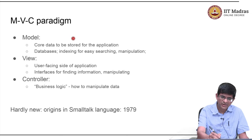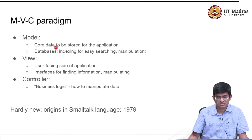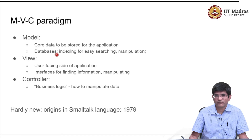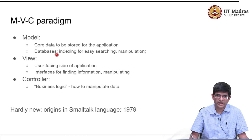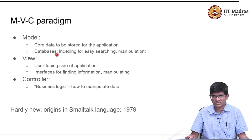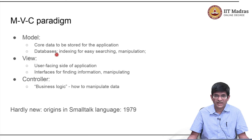Why is MVC useful? Because it helps to separate out three fundamental concepts. The first is the model, which is the core data that needs to be stored for the application — emails and the indexes. And it also says that this can be done using databases. What kind of database should I use? Should I use a relational database like MySQL or SQLite? Should I use a NoSQL system? Should I use plain CSV files? Various alternatives are available and you can just focus on that while looking at the model. Then comes the part that faces the user — the view. The view basically says what should the user be looking at, and it also provides for the interfaces: if I have a keyboard, a touch screen, or a voice interface, how should I interact with the view?